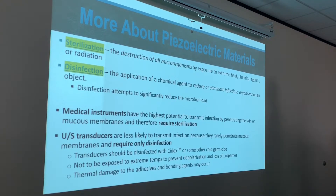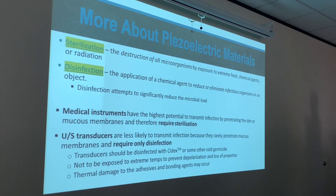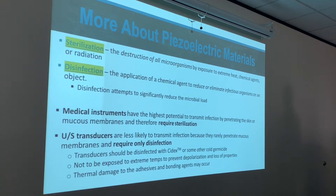Don't just go grabbing transducers in the morning — that's how you can pick up contamination. Medical instruments that penetrate the skin or mucous membranes have the highest potential to transmit infection and require sterilization. We don't break the skin with our transducers — we go inside body cavities but never penetrate the skin. That's why sterile gel and sterile probe covers exist for sterile environments, such as when imaging over an open wound like diabetic or arterial ulcers.